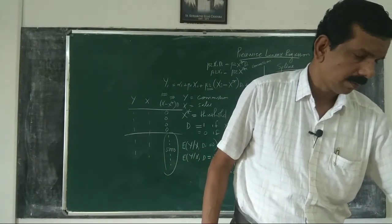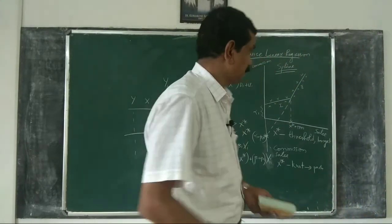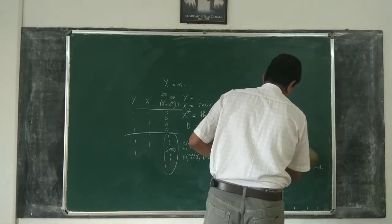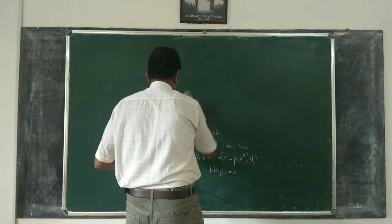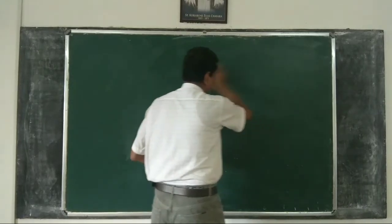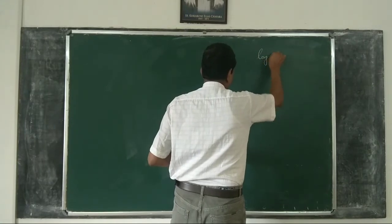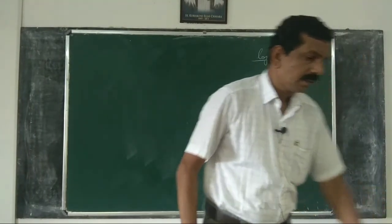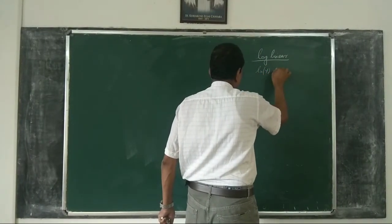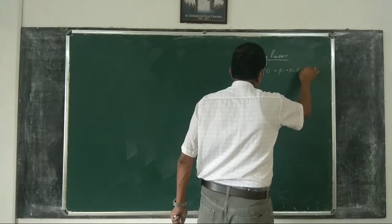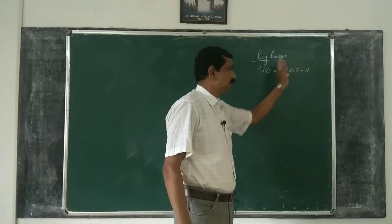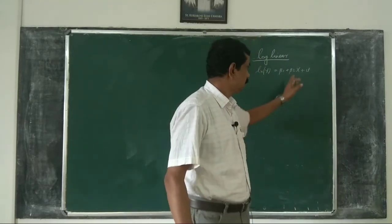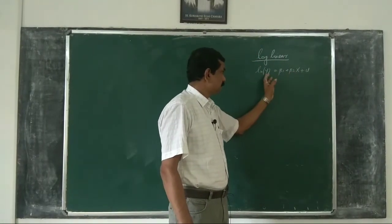Let us consider one more example: how to interpret dummy variables in semi-log regression models, also known as log-linear models. We know that if our model is ln(y) = β1 + β2·x + u, this is a semi-log model, and the interpretation of β2 is the percentage change in y for a unit change in x.